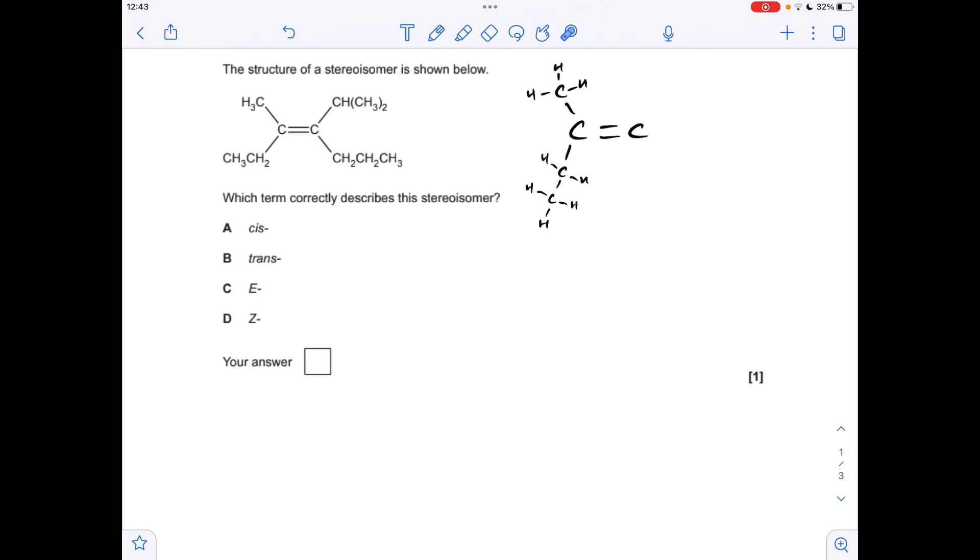So we're looking at atomic number first of all, you see they're both carbon. So then we need to look at what's bonded then to that carbon. So on the top one we've got three hydrogens each with an atomic number of one. Whereas on this carbon we've got two hydrogens and then a carbon. So because of that carbon, this one has the priority.